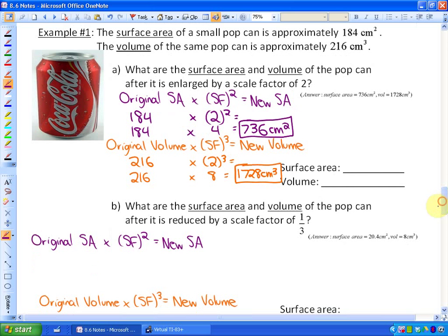The next part B just says, what are the surface area and volume of the pop can after it is reduced by a scale factor of 1 third? What you may want to do is represent 1 third as a decimal if you'd like to, which is 0.333 continued.